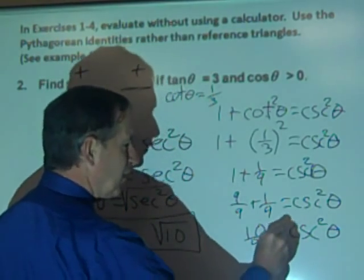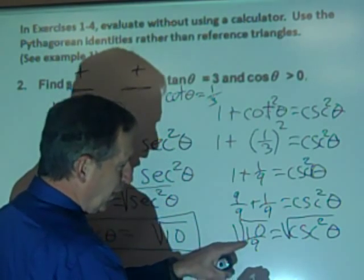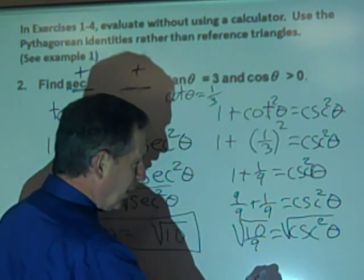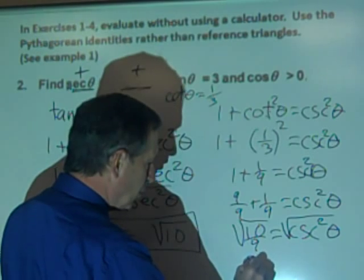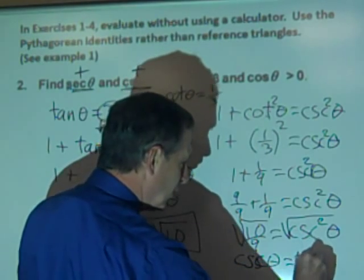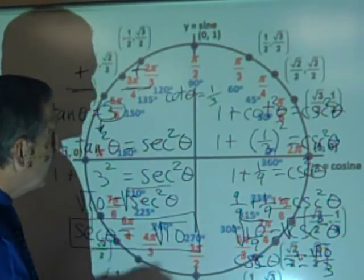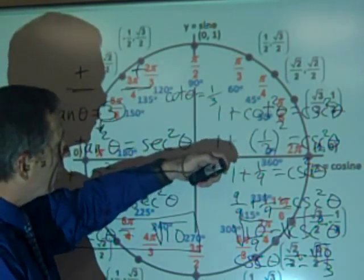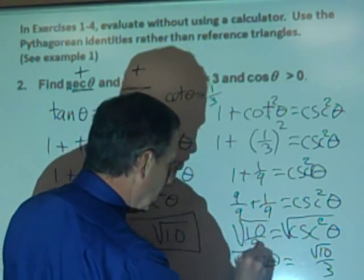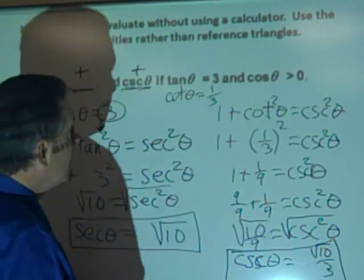Solving for cosecant theta, we take the square root of both sides, giving square root of ten over the square root of nine, which is three. So cosecant theta equals plus or minus square root of ten over three. Since we're in quadrant one, cosecant is positive, so we eliminate the negative. Cosecant theta equals square root of ten over three.